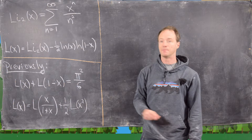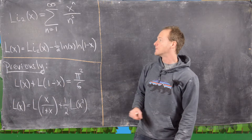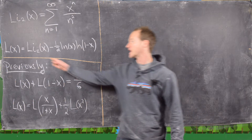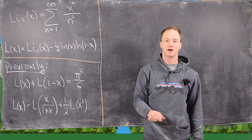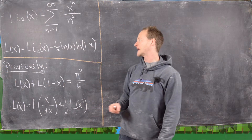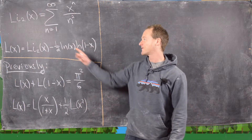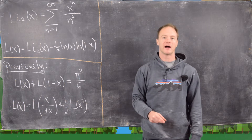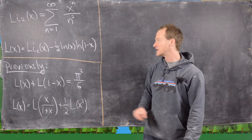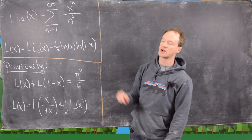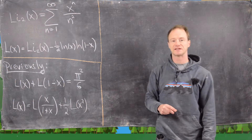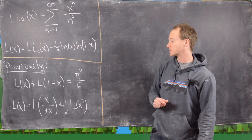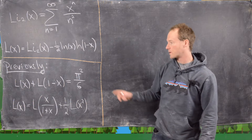That's Euler's famous sum. We'll also want to look at this companion function L of x, which is the dilogarithm evaluated at x, minus one half natural log of x times natural log of 1 minus x. In the previous video, we constructed an integral version of this sum — in some ways like a generating function for it — a closed form.